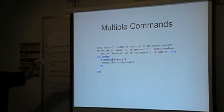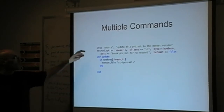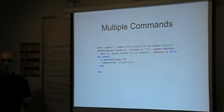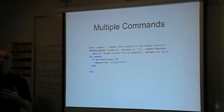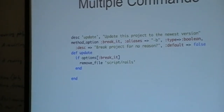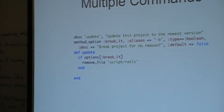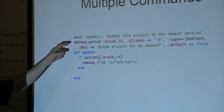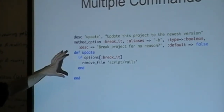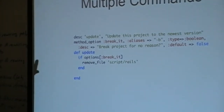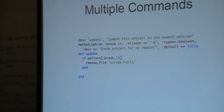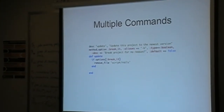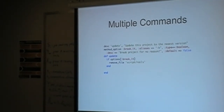Here's a more complex command added to the same pet store app — an update script. If I want a command line app I can run in an existing project, but I want to pass it some parameters. This syntax shows how Thor takes command line arguments and parses them. We've specified one option called 'break_it,' with alias dash-B, enforced as a Boolean, defaulting to false. Within the method itself, we check whether options[:break_it] got passed in — if it did, we remove the Rails script file. Because obviously, when writing upgrade scripts, all we want to do is break our projects.